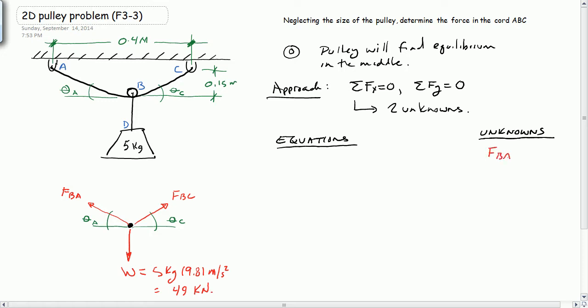So let's start to write down our knowns and unknowns. We don't know FBA, there's number 1. The second thing we don't know is FBC. The third thing we don't know is theta A. And the fourth thing we don't know is theta B. But we do have equations of equilibrium.